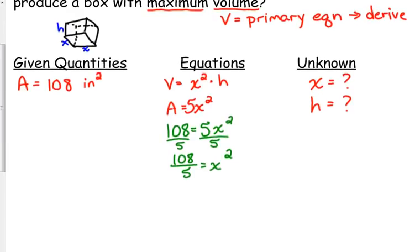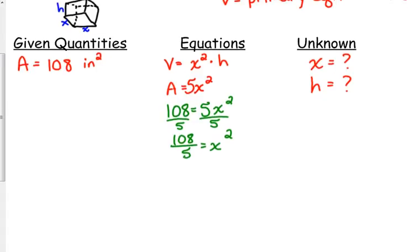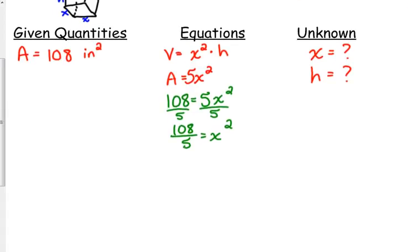So the unknown is the dimensions. So we need to know X and we need to know H. Now if it's asking for a maximum volume, then that should, anytime you see the word maximum or minimum, you should think derivative equal to zero is going to give me the values that I need. So we're trying to maximize volume. So we need to take the derivative of volume. But before we do that, I'm going to substitute. Volume equals, instead of X squared, I'm going to write 108 over 5. And then I'm going to take the derivative.